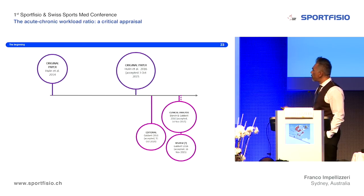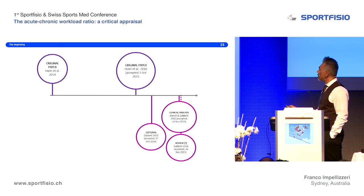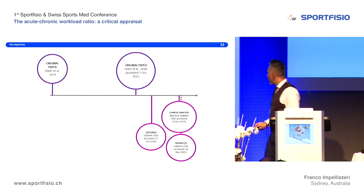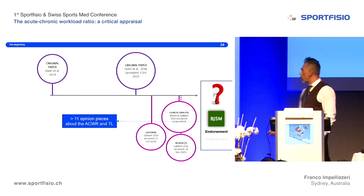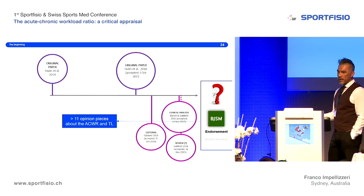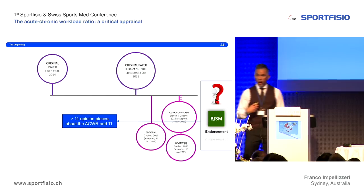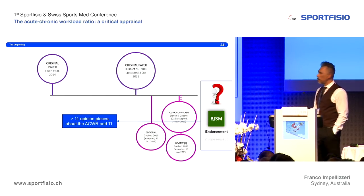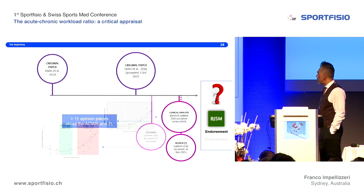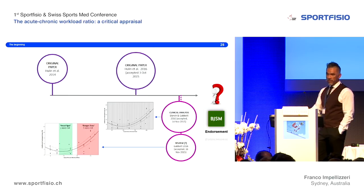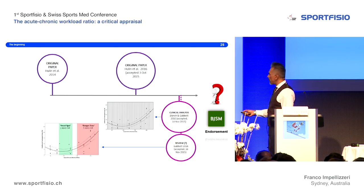Within a couple of months of those papers, there were three opinion pieces — an editorial, a clinical analysis, and a review — which amounted to an endorsement from the British Journal of Sports Medicine of this model. If you read that journal, you'll find more than 11 opinion pieces on this topic. In those opinion pieces, the graph that has been shown repeatedly in this field was presented for the first time.